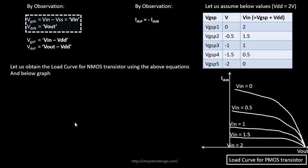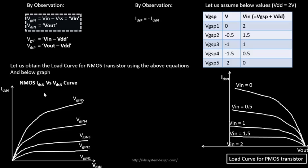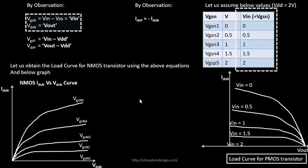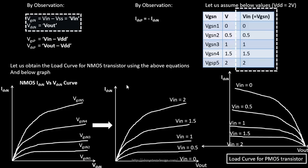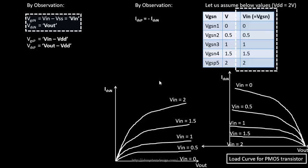We'll use the graph we derived earlier from SPICE simulations: IDSN vs. VDSN with VGSN as parameter. The next step is simply to replace all instances of VGSN with Vin and VDSN with Vout — that's it. You get the NMOS load curve. It's just a matter of renaming the axes. This is the load curve for the NMOS transistor.